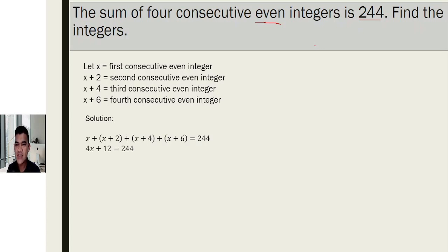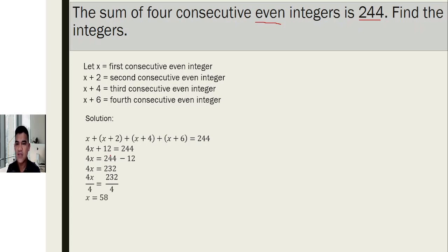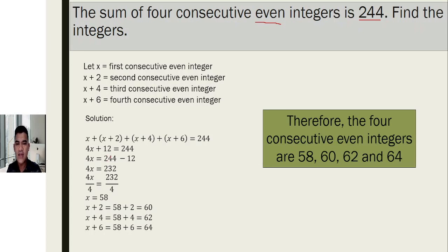Combining like terms: four x plus twelve equals 244, since 2 plus 4 plus 6 equals 12. Transposing 12 to the right side gives four x equals 244 minus 12, which equals 232. Dividing both sides by four gives x equals 58. So the first consecutive even integer is 58, the second is 60, the third is 62, and the last is 64. You can verify by adding these four — the sum should be 244.